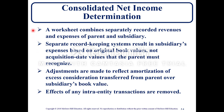A worksheet combines separately recorded revenues and expenses of parent and subsidiaries. Separate record keeping results in the subsidiary's expense based on original book values, not acquisition date values that the parent must recognize. Adjustments are made to reflect amortization of excess consideration transferred from parent over the subsidiary's book value, and effects of intra-entity transactions are removed. All this is done to ensure consolidated net income is determined correctly.